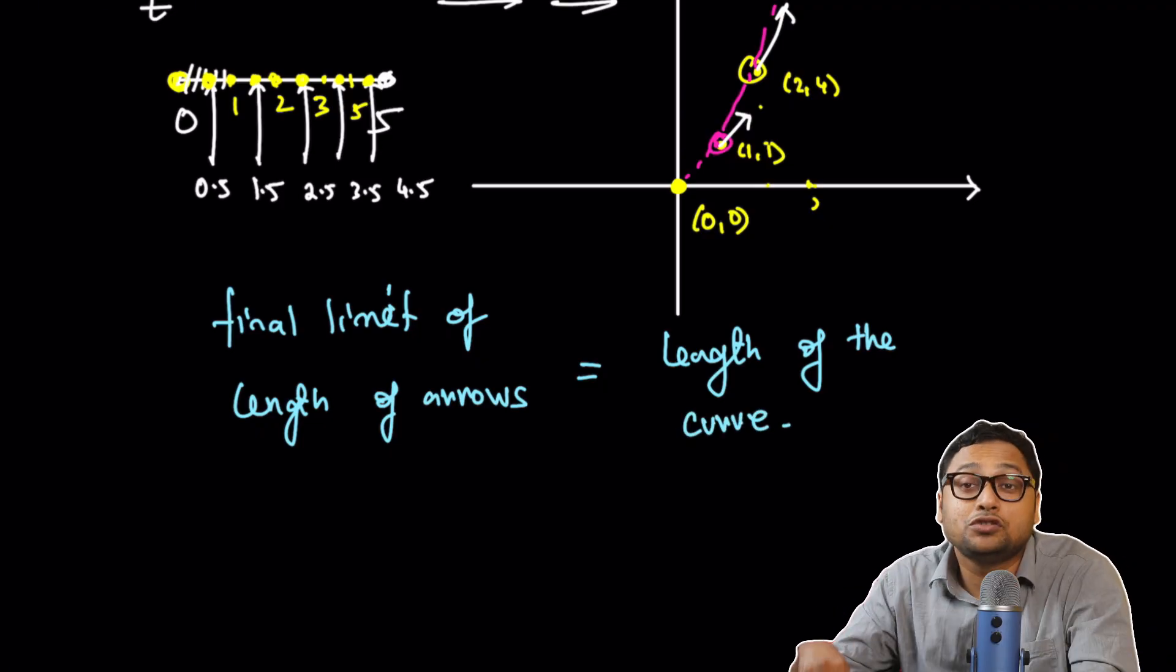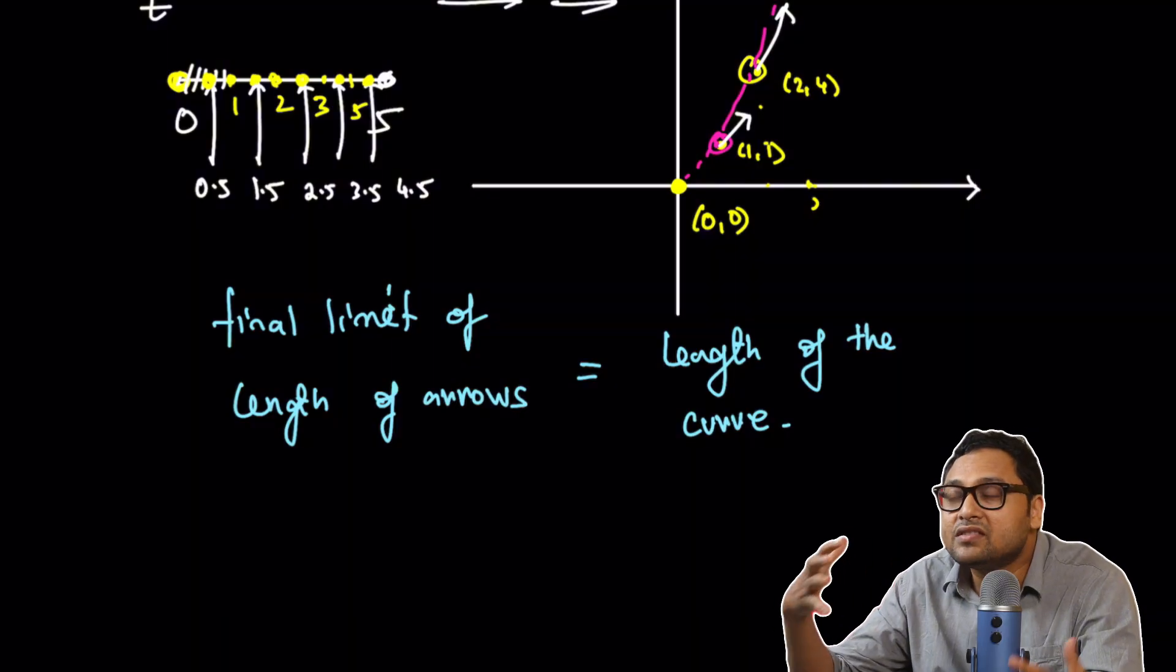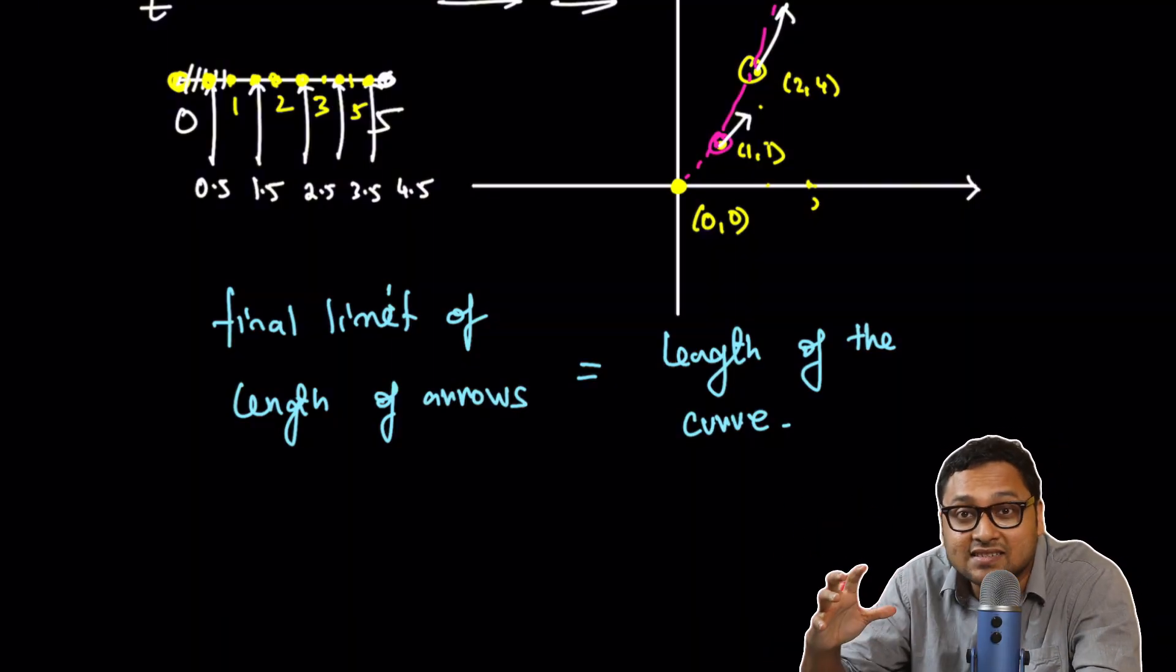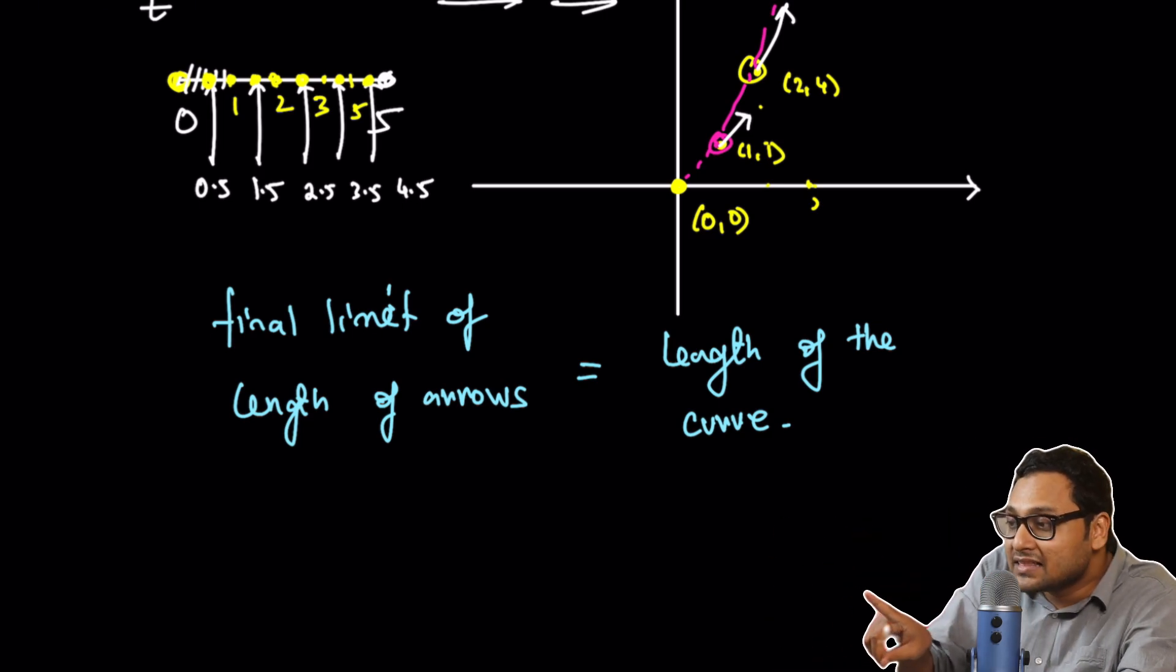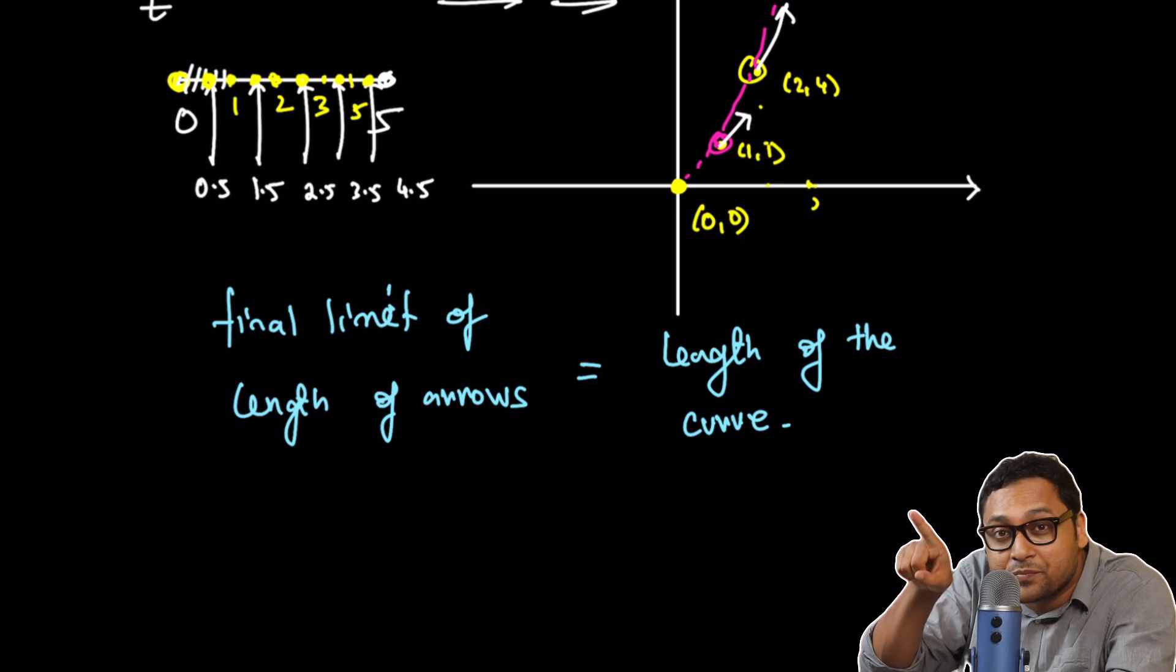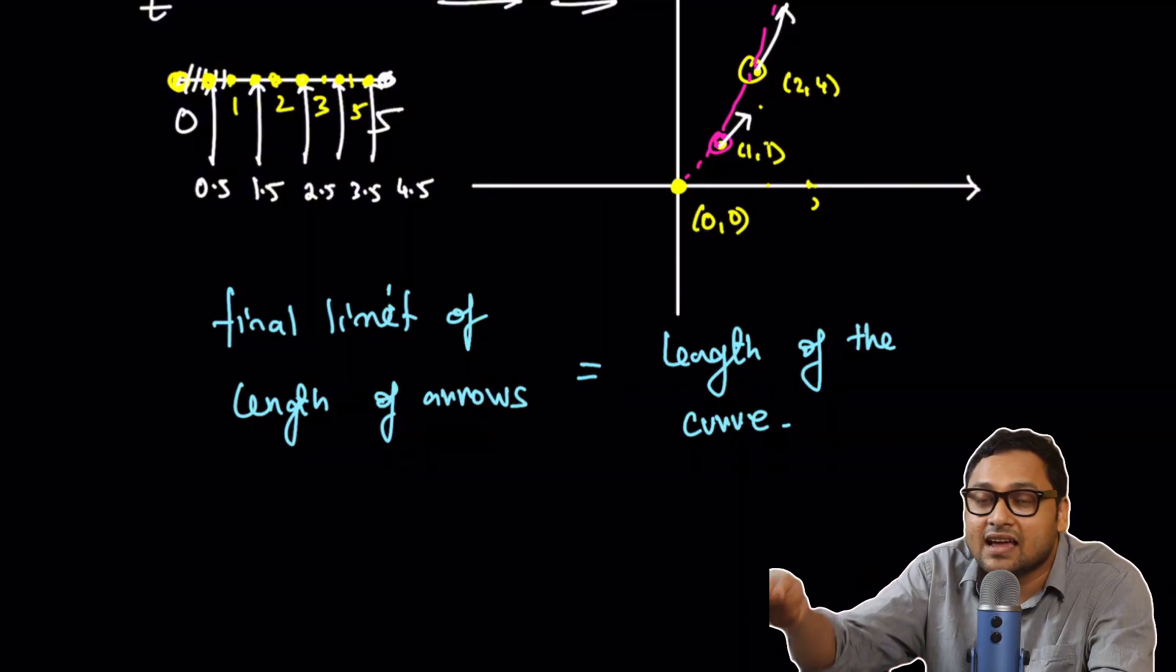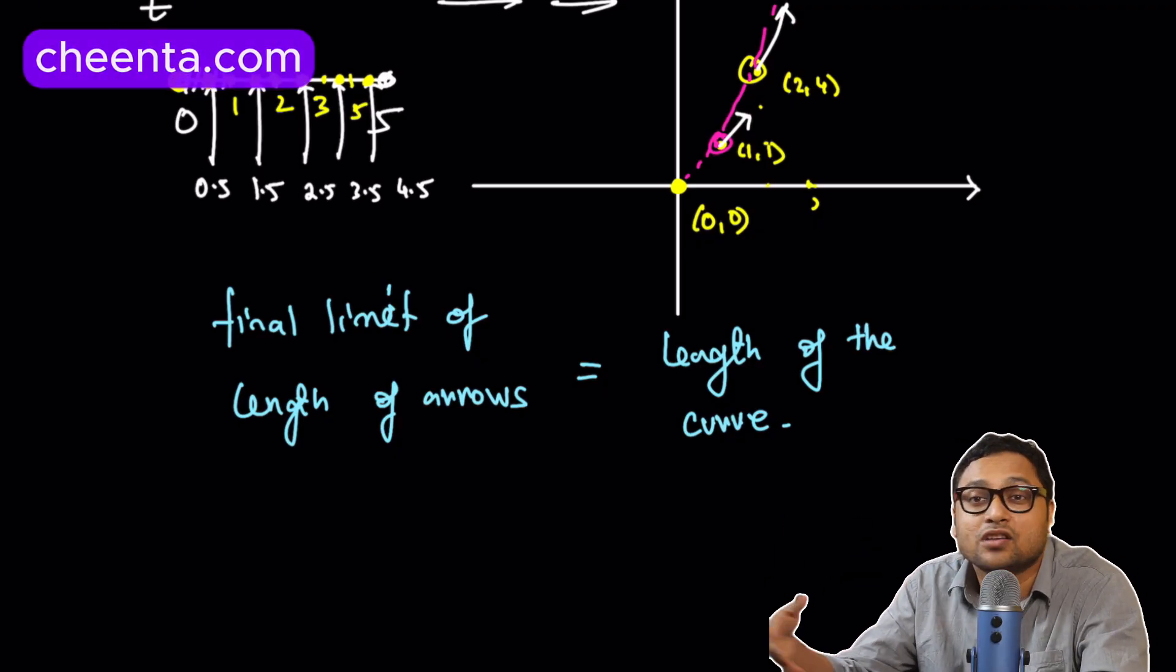So, the point to note here, friends, is that the way we think about derivative as rate of change, it has more to it than just the rate of change of the curve. It gives you the arrows that represent that change at every point. And now, you can use those arrows to calculate the length of a curved thing. I hope you learned something.